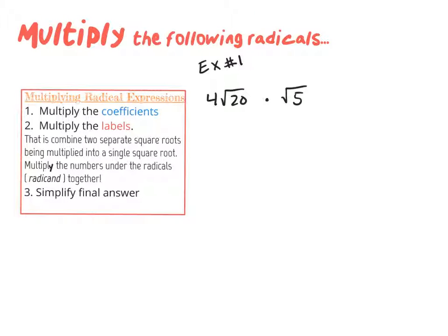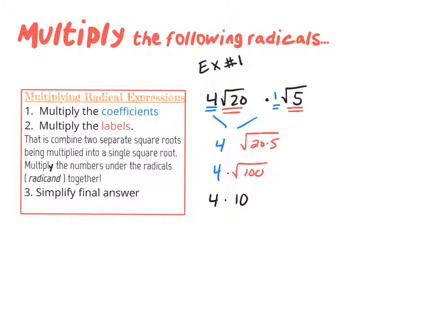Here's another example of multiplying radicals: 4√20 times √5. The coefficient of the first is 4; the second has a coefficient of 1. So 4 times 1 is 4. The labels — root 20 and root 5 — combine under one radical to give √100. We always simplify: √100 is 10, and 4 times 10 is 40.